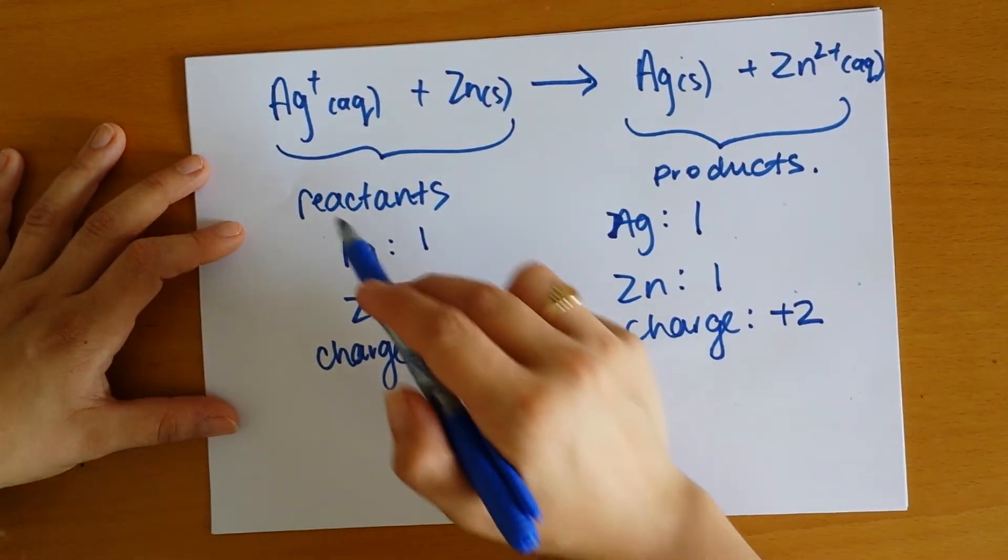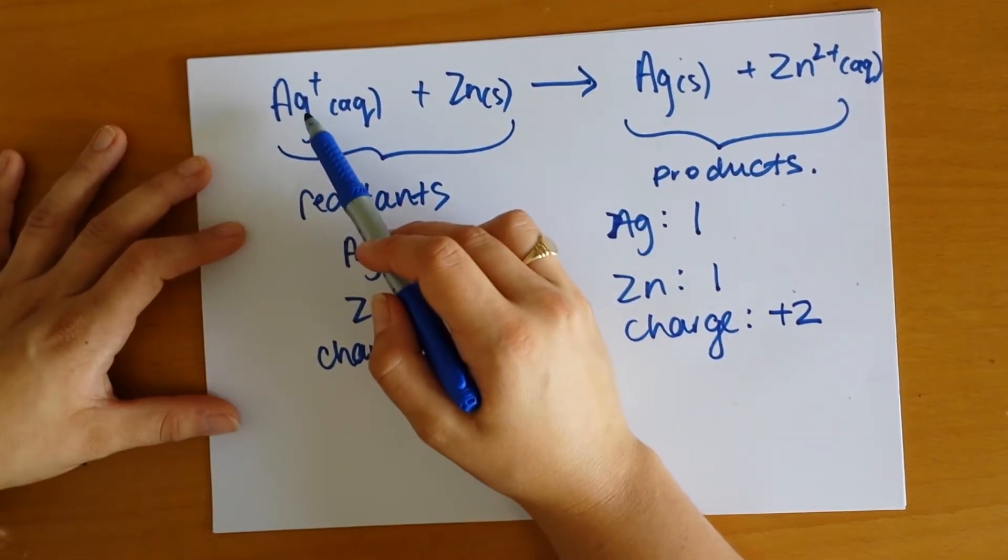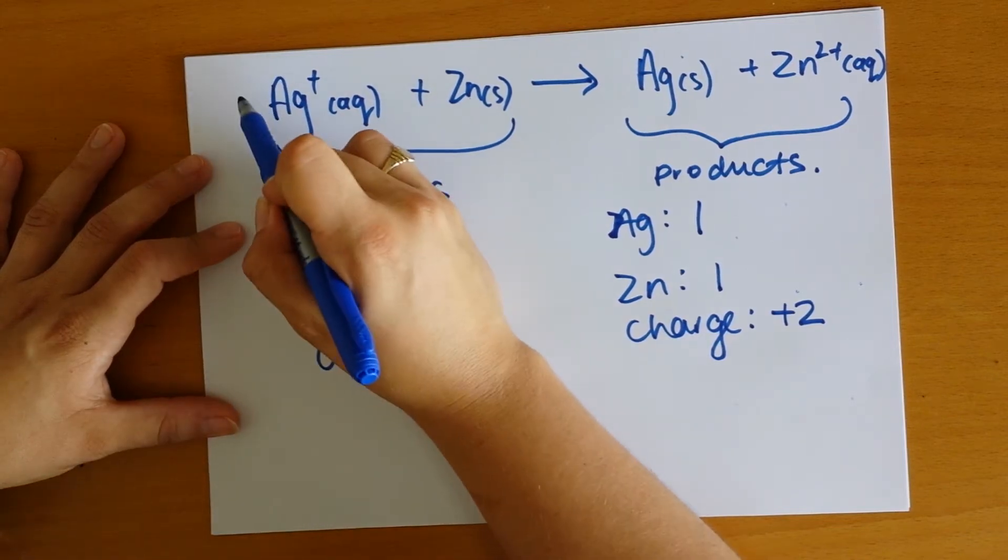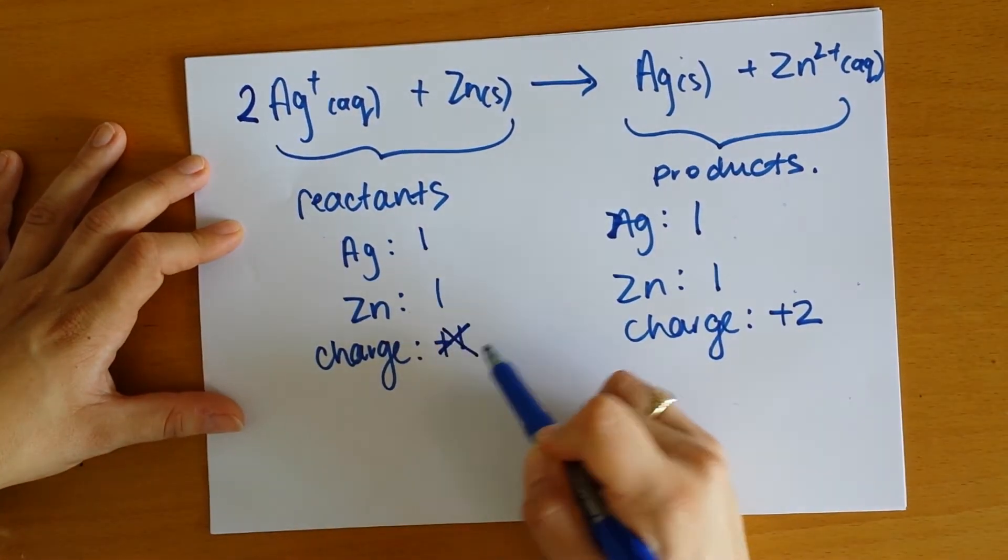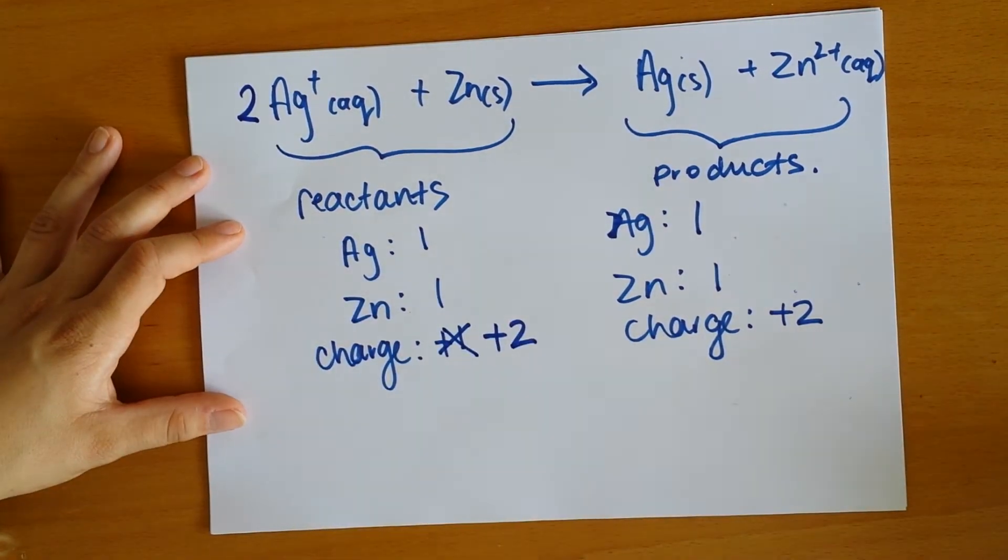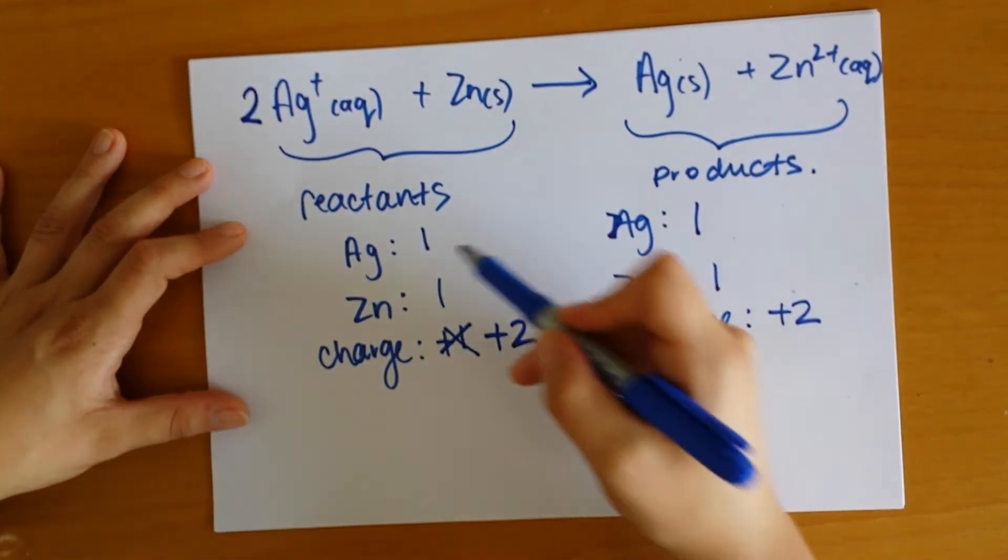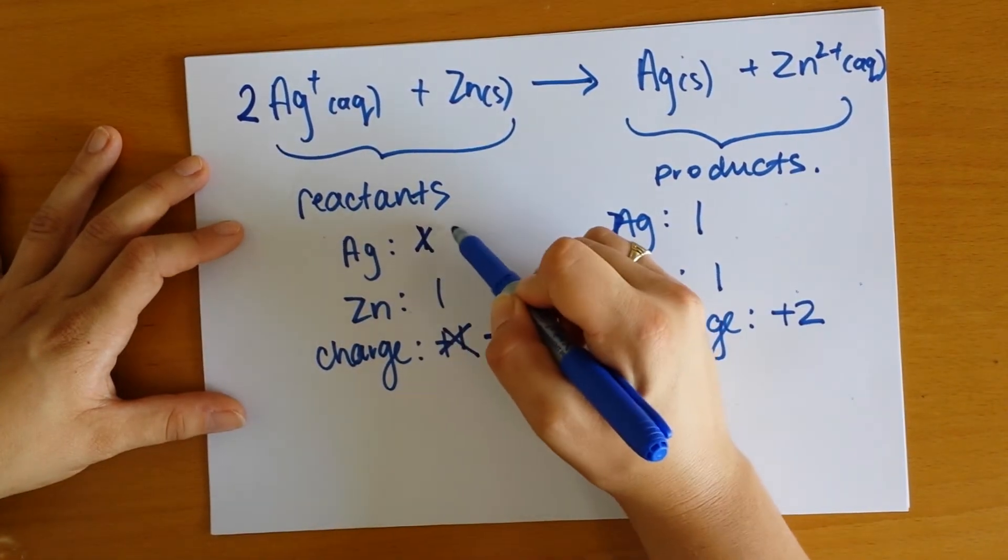To balance our charge, we add a coefficient in front of the charged species - in this case, the silver. So we add 2 in front of that, and now we have a +2 charge on this side. That's good because our charges are balanced, but we've added another atom of silver.